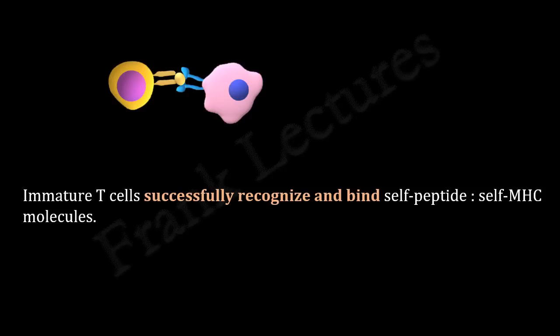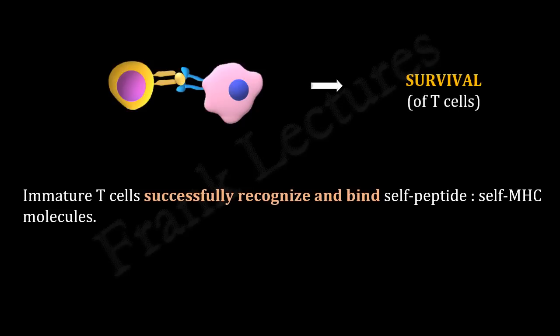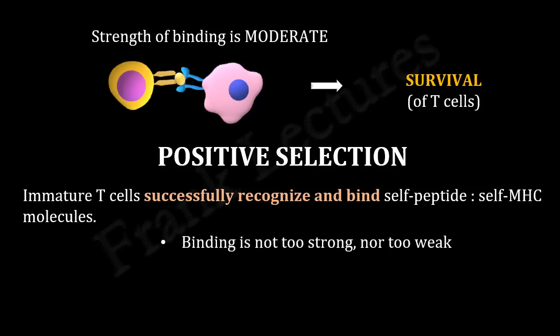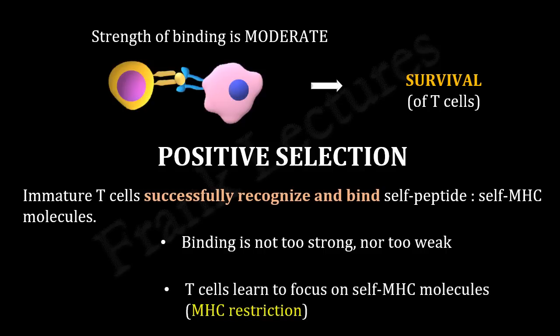If immature T-cells are successful in recognizing these peptide-MHC molecules, a survival signal is conveyed to the nucleus of the immature T-cell, and these T-lymphocytes divide and grow further. This process is known as positive selection. Positive selection selects those immature T-cells that bind moderately to the self-peptide self-MHC molecules — this interaction is not too strong nor too weak. One of the main roles of positive selection is to make sure that thymocytes are capable of recognizing self-MHC molecules, so that T-cells learn to recognize peptide antigens in complex with MHC molecules.